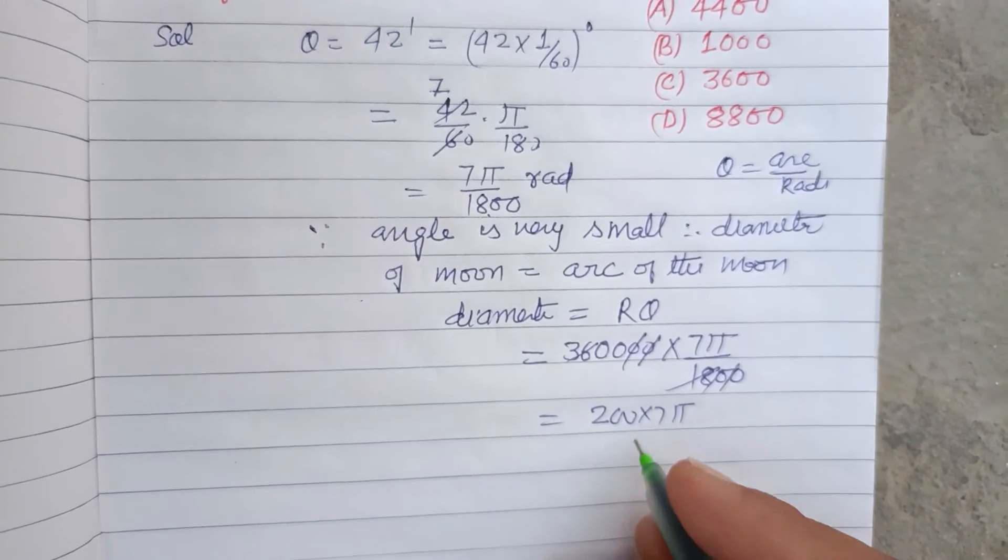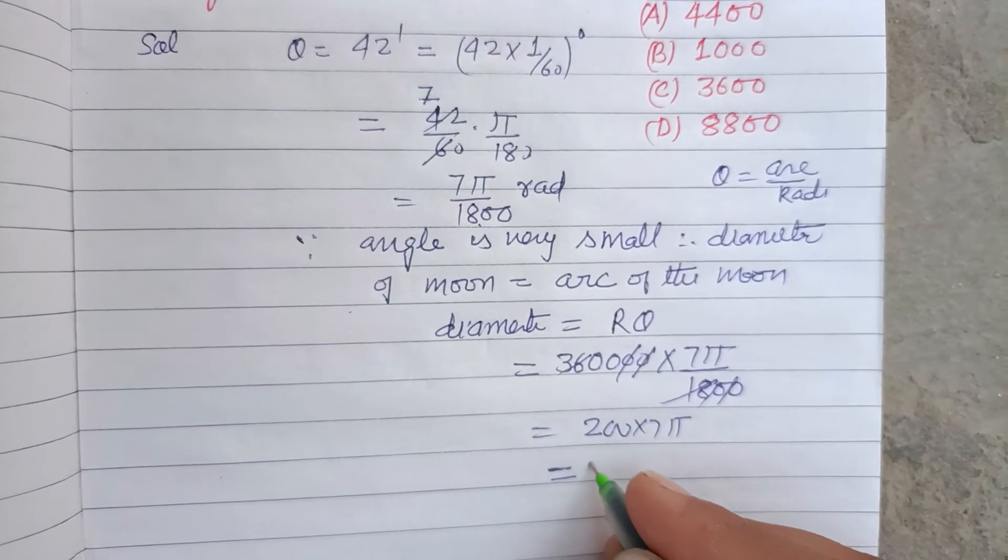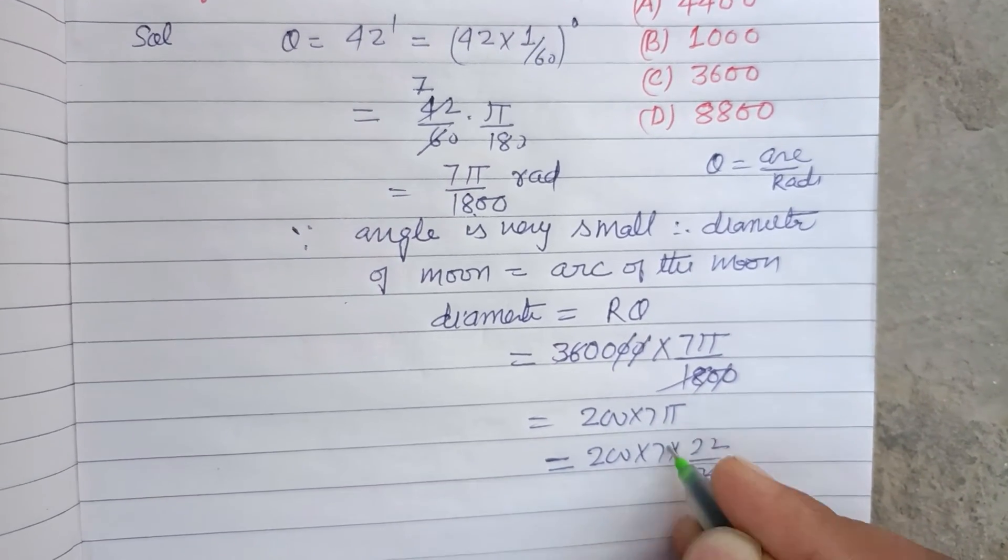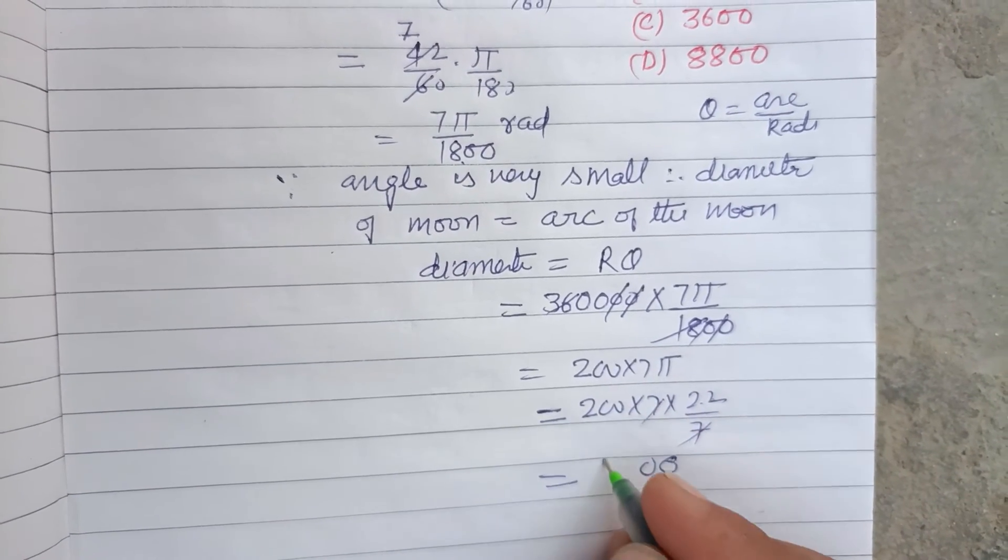Here 200 times 7 times π - taking π as 22 over 7 - the 7s cancel. We get 200 times 22, which is 44. So 4400.